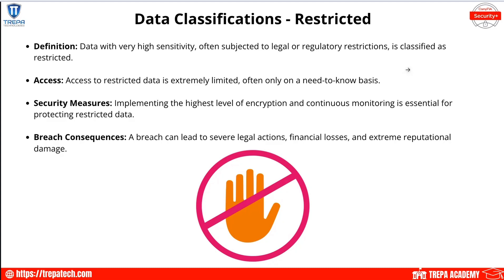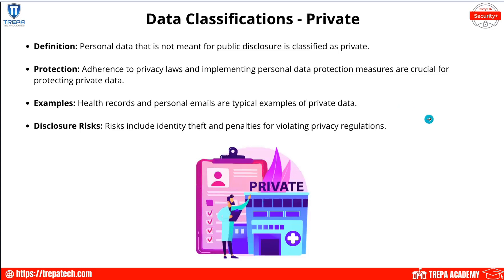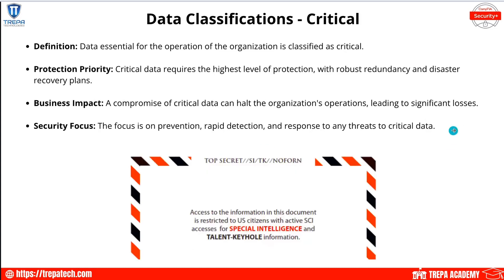Restricted data has very high sensitivity and is subject to legal or regulatory restrictions — this includes HIPAA and GDPR. Private data is personal data not meant for public disclosure, such as health records and personal emails belonging to a user or organization.